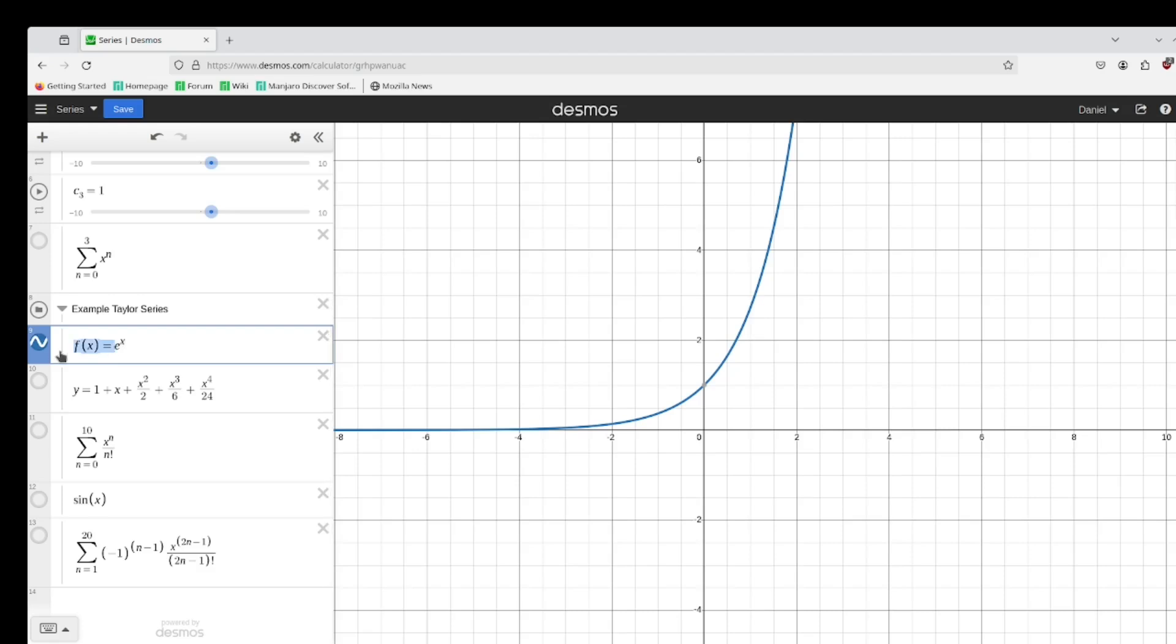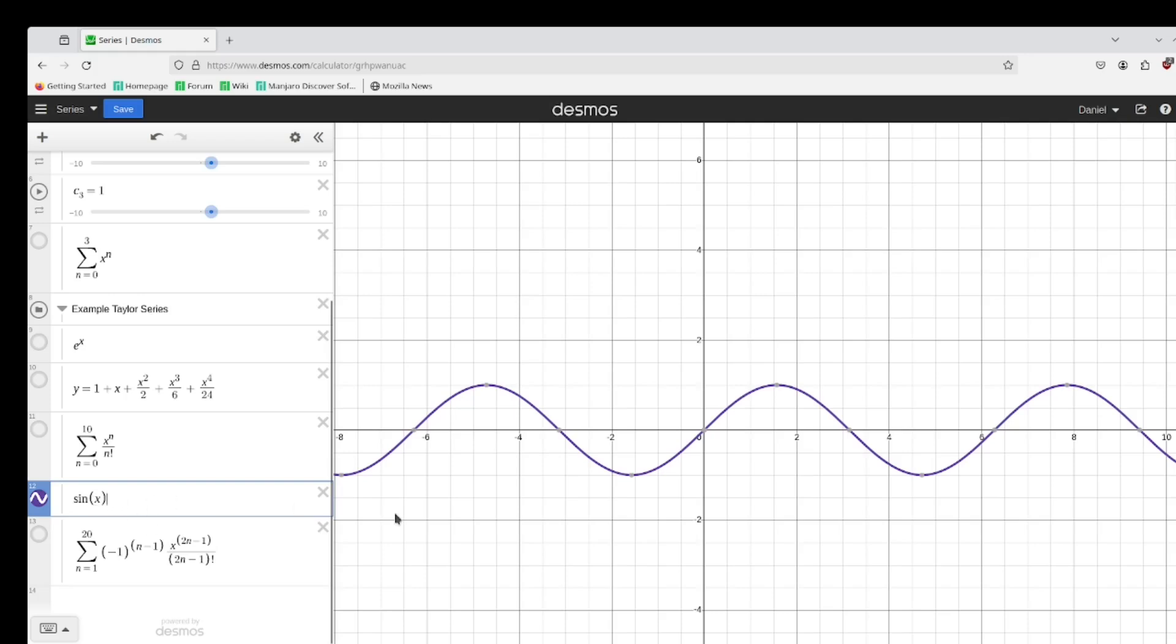Now we look at a function like sine of x. We do the same process. So let's bring this graph back. We follow the same process. So sine of x evaluated at zero, that is zero. And the derivative of sine of x, that's cosine of x. And cosine of x evaluated at zero is one. And you divide that by one, so that is still one. So that's why it's still x.